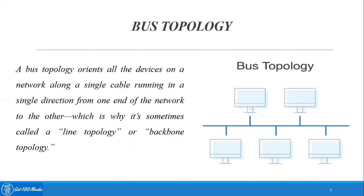Now let's understand what is bus topology. The bus topology orients all the devices on the network along a single cable running in a single direction from one end of the network to the other, which is why it's sometimes called a line topology or backbone topology. All systems are connected through a single line passing from one end to the other.